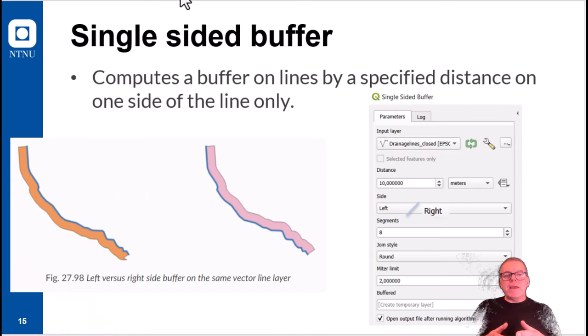So what you may remember from representation is that a line is always starting in one node and ending in another node. And thus all lines have a direction, and thereby they have a left hand side and a right hand side. In many GIS, you can have single sided buffer. And in QGIS, this is a specific tool where the buffer is computed on only the left or the right hand side of the linear feature.